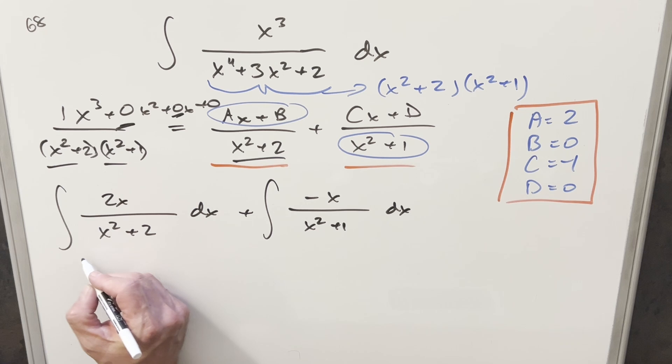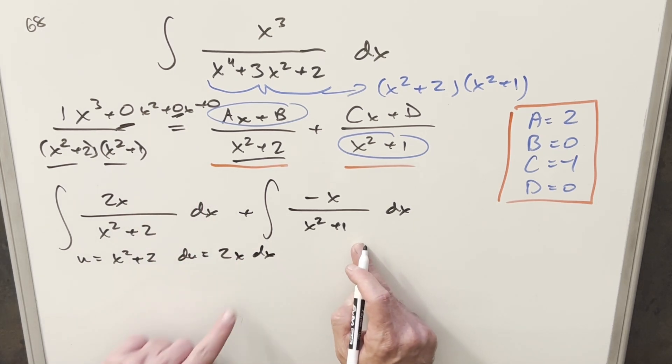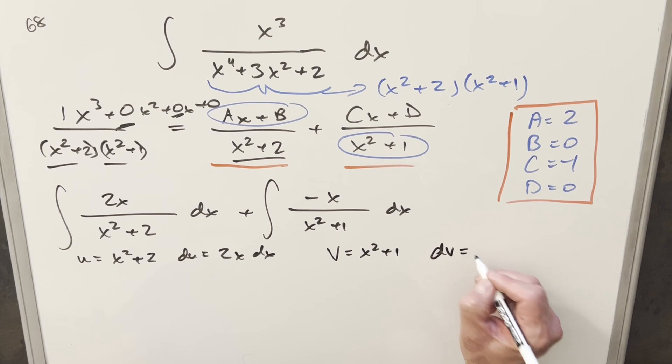For this first one, we can do a really quick u substitution. If u equals x squared plus 2, then du is just going to be 2x dx, which we have in the numerator. Over here, we'll use another variable. We'll call it, we'll do a v substitution. So if we have v equal to x squared plus 1, then dv is going to be 2x dx.